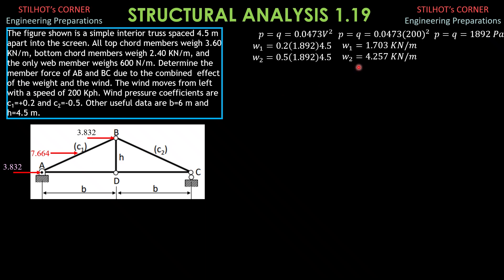The 20.7 kilonewtons is half the weight at A and B vertically. The length of AB is the square root of 6 squared plus 4.5 squared, which is 7.5 meters. So half the weight of AB is 3.6 kilonewtons per meter (top chord) times 7.5 divided by 2, plus half the weight of the bottom chord: 2.4 times 6 divided by 2. You get 20.7 kilonewtons. Thus the total vertical load at A is 5.109 plus 20.7 equals 25.809 kilonewtons downward, where 5.109 equals 1.703 times 6 divided by 2.